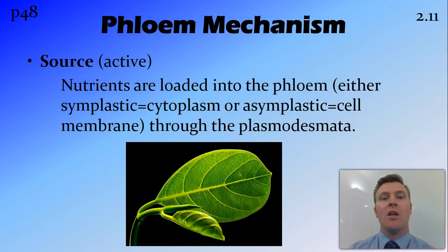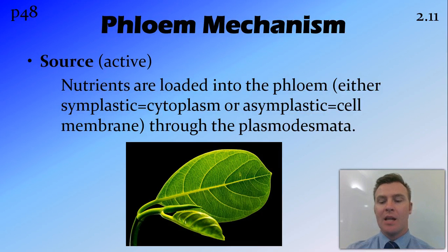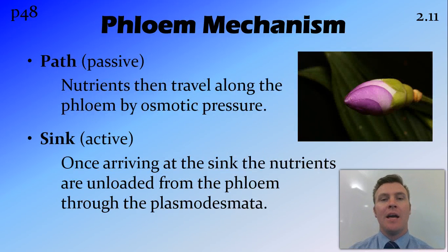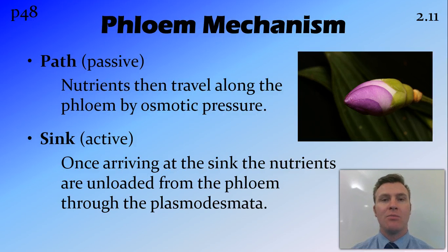At the source, nutrients are loaded into the phloem from wherever they're produced. This can happen simplastically through the cytoplasm or apoplastically through the cell membrane, then through the plasmodesmata into the phloem cells. This is an active process — it takes energy to get those nutrients from the source palisade cells into the phloem. Once inside the phloem, it uses osmotic pressure to move nutrients between the different sieve cells around the plant. This does not use any energy — it relies on the passive transport of osmosis.